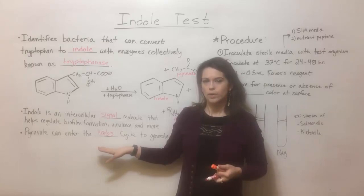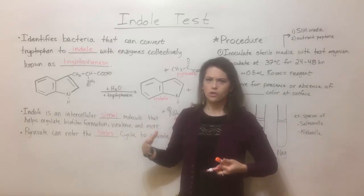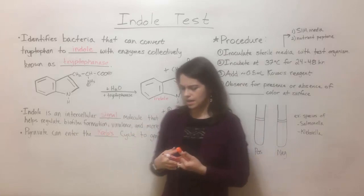The TCA cycle, the tricarboxylic acid cycle — these are all different names for the same cycle that is part of the aerobic respiration pathway. So glycolysis, the Krebs cycle, and the electron transport chain work together to generate ATP.